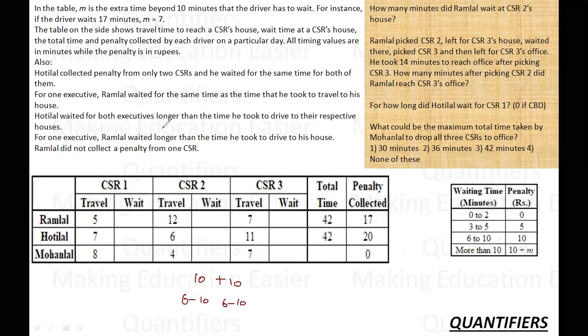Khotilal waited for both the executives. It is the second condition related to Khotilal. Khotilal waited for both the executives longer than the time he took to drive to their respective houses. So it cannot be 11 definitely because in that case, since the fine was 13, so it is definitely this. And since he is taking more time, can I say the time taken can be either 8 or 9 or 10 minutes? Why? Because the fine collected has to be 20. So let's see whether 8, 9, 10 are feasible or not.